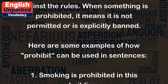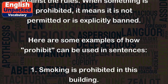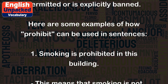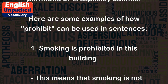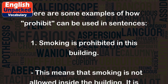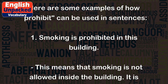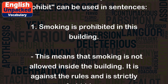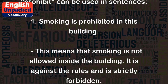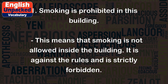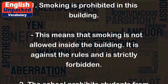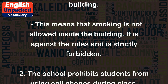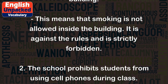Here are some examples of how 'prohibit' can be used in sentences. 1. Smoking is prohibited in this building. This means that smoking is not allowed inside the building. It is against the rules and is strictly forbidden.